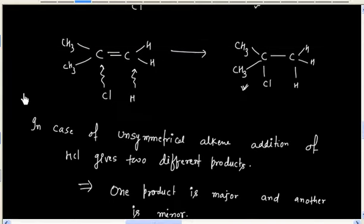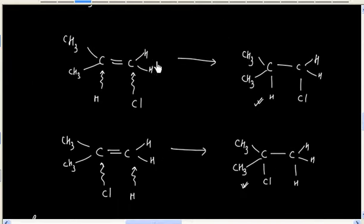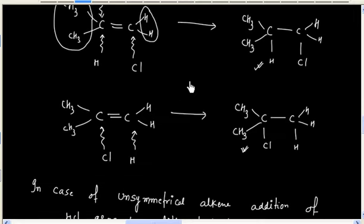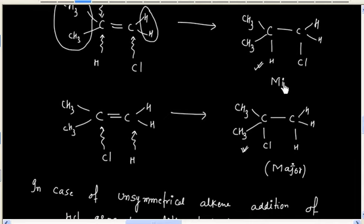For example, in the above case, this carbon has two hydrogens and this carbon has no hydrogen — basically this carbon has two methyl groups. So hydrogen will go to this carbon. So this product will be the major product because hydrogen is attached to the carbon that already has more hydrogens. This one is the minor product.